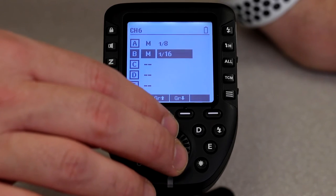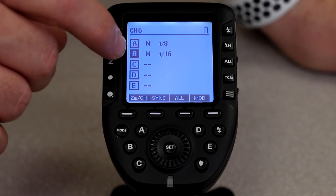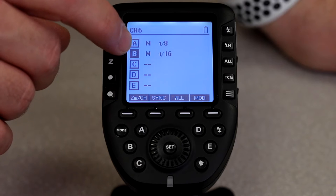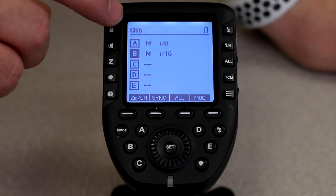Now what happens is we've got the main light on A at 1/8 power, the secondary or hair light on B at 1/16 power, both of them on channel 6.